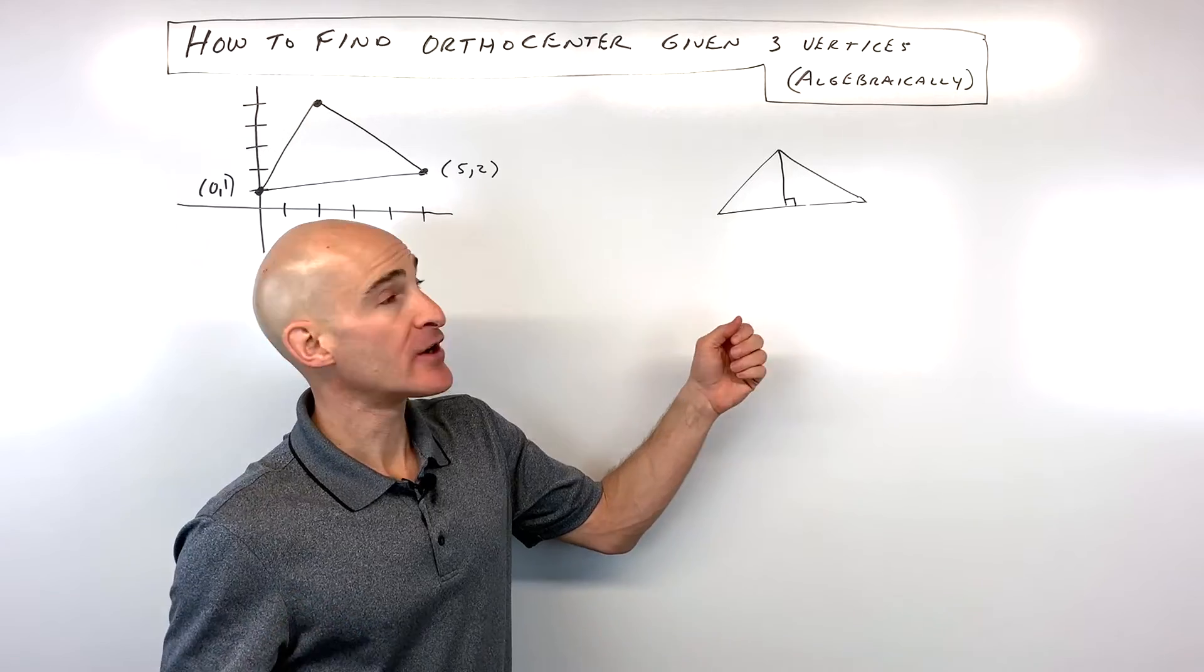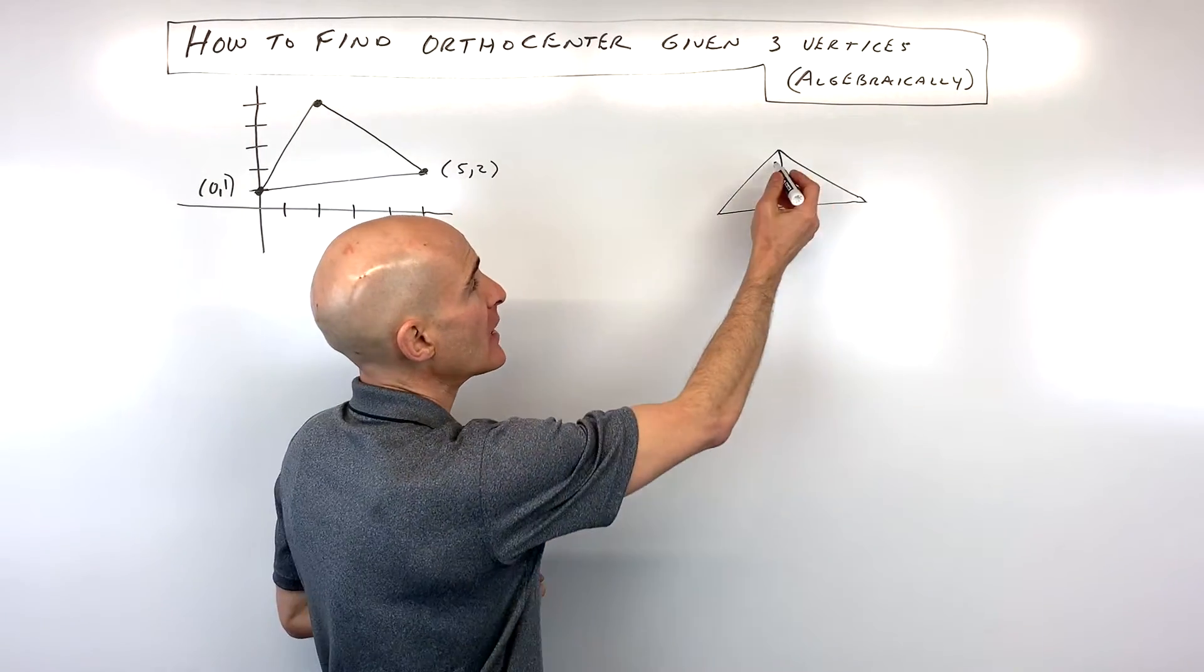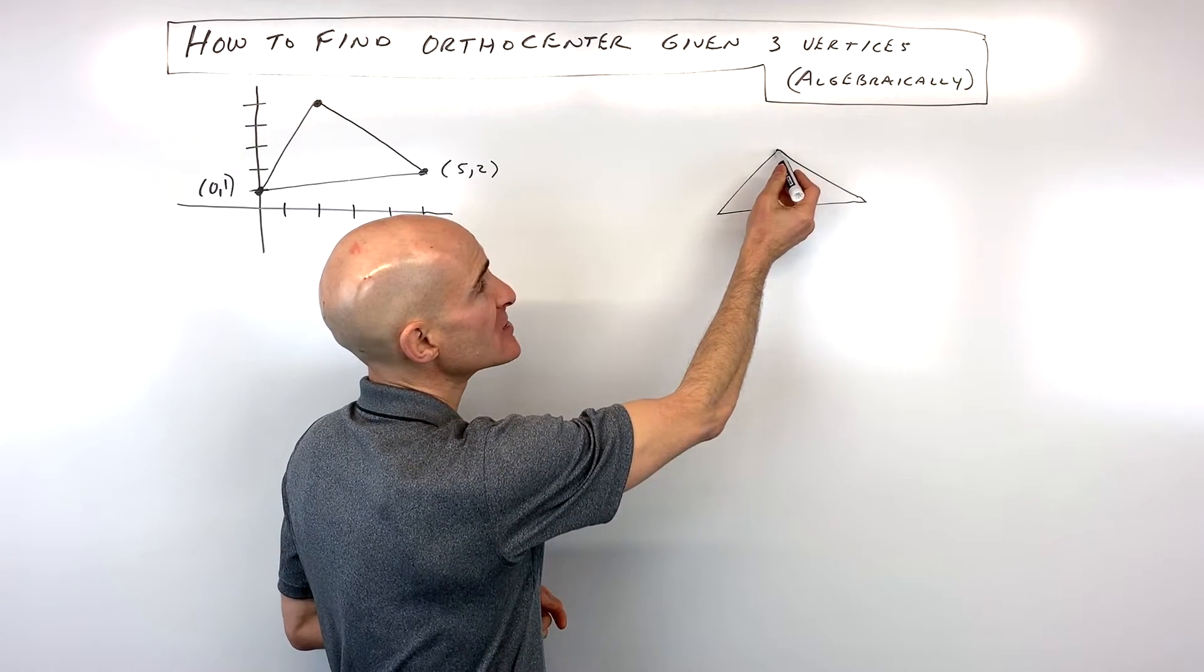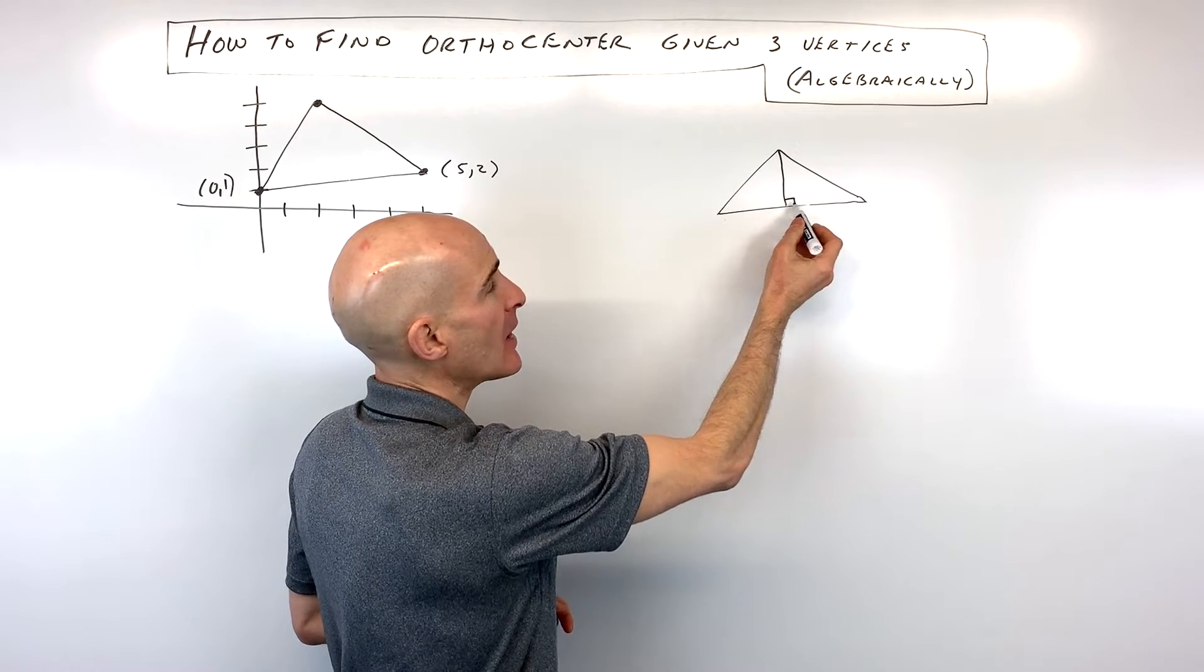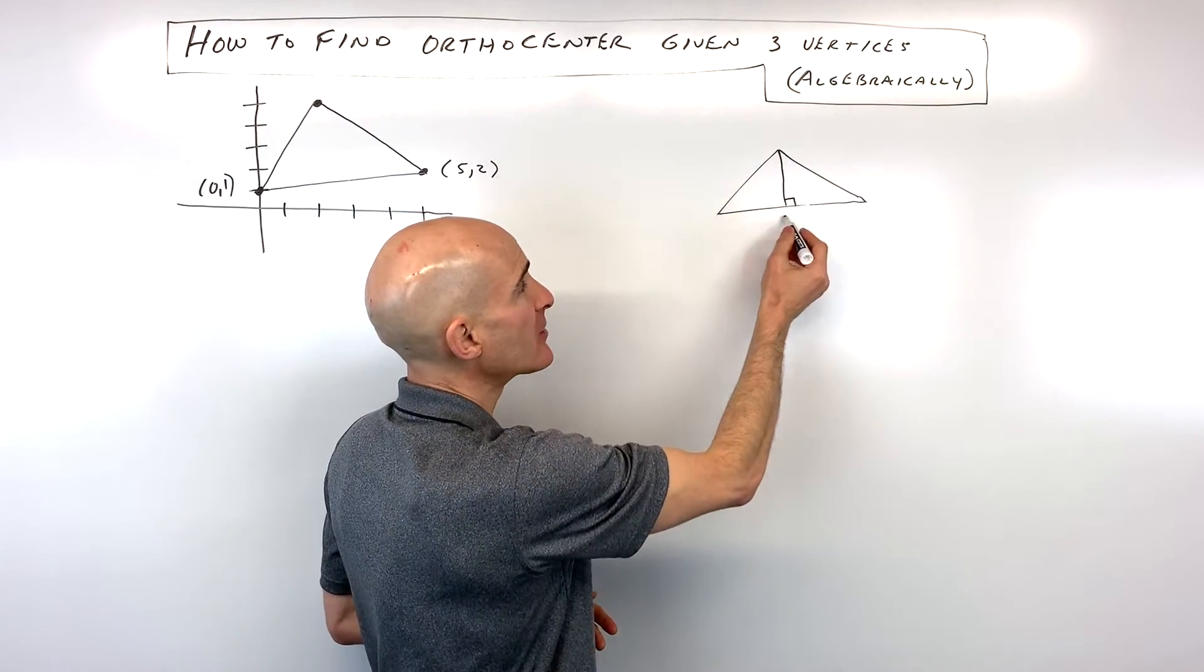When you're finding the orthocenter, you're finding the altitudes of the triangle and where those three altitudes intersect. The altitude is the perpendicular distance from the vertex to the opposite side. It doesn't necessarily bisect the opposite side - it's just the height of the triangle.